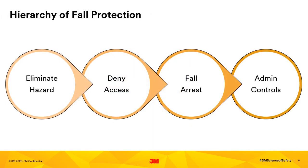When doing your job hazard analysis, you should follow the hierarchy of fall protection. Number one, you should try to eliminate the hazard. This may be done by engineering out the hazard or modifying work procedures. Some examples are relocating an electrical panel box to a more accessible location, using a pole or adapter to change a light bulb, or installing a chain on an overhead valve.